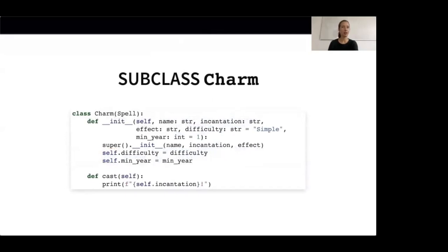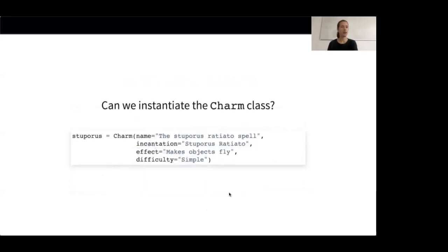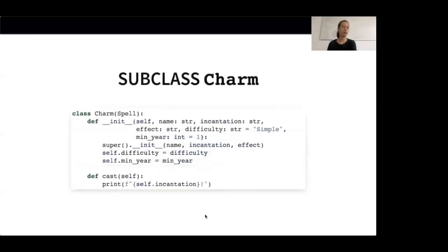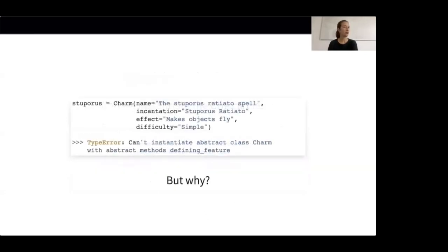Let's create a subclass. The Charm class might look as follows: it inherits from our abstract base class Spell, and naturally there are easy charms and very advanced ones, so we add two new attributes — the difficulty of the spell and minyear, which specifies at what year students will be able to cast the charm in question. We further add an implementation for the abstract method cast. Let's try to instantiate this Charm class using StuporusRaciato. But we cannot instantiate the class with its current implementation — it raises an error at instantiation time. Why? Because we forgot to implement the defining_feature method. This highlights a big advantage of using abstract base classes: when a subclass does not implement all required methods, we get an error at instantiation time rather than only when calling the missing method.